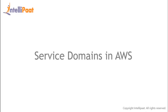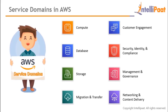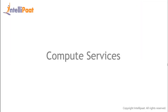The AWS service domains are vast. Key domains include: compute, database, storage, migration and transfer, customer engagement, security/identity and compliance, management and governance, and networking and content delivery. The explanations of each service will be kept simple enough for anyone to understand.